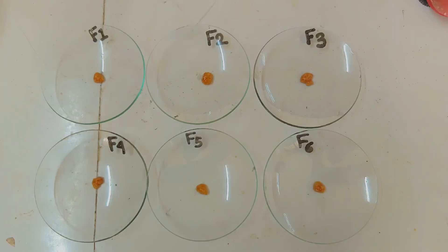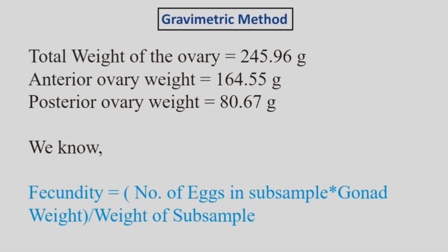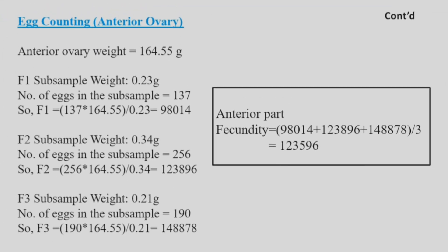Then we counted the number of eggs in each subsample. For instance, F1 contained 137 eggs. Using the formula — fecundity equals number of eggs in subsample multiplied by gonad weight divided by weight of subsample — we calculated fecundity for each part. For F1: fecundity = 137 × 164.55 ÷ 0.23, giving a fecundity of 98,014 eggs.